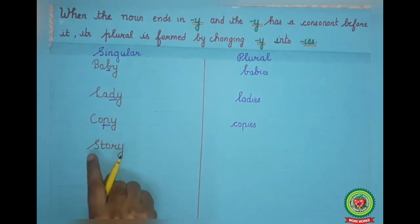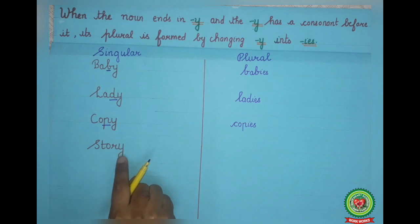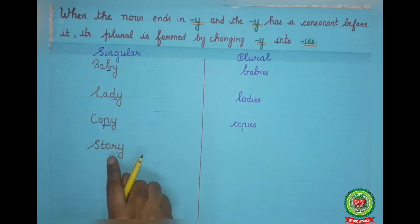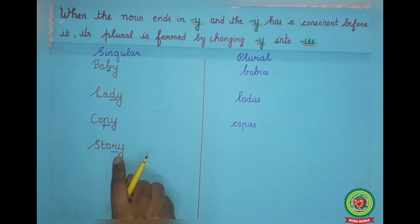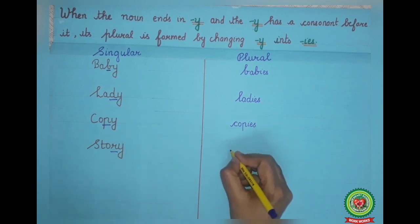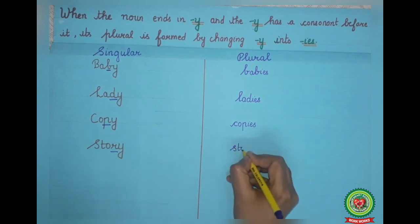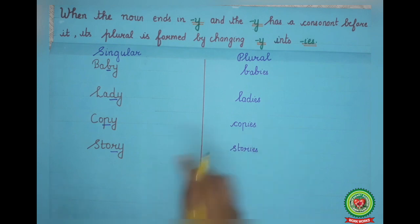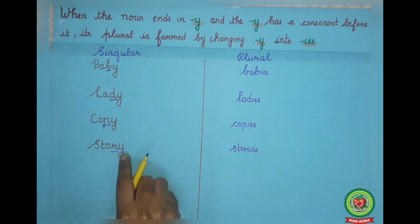Next example: story. Again, the singular noun ends with Y but before Y, the consonant R is there. So we will make it plural by adding IES to the singular noun. So stories will be the plural noun.